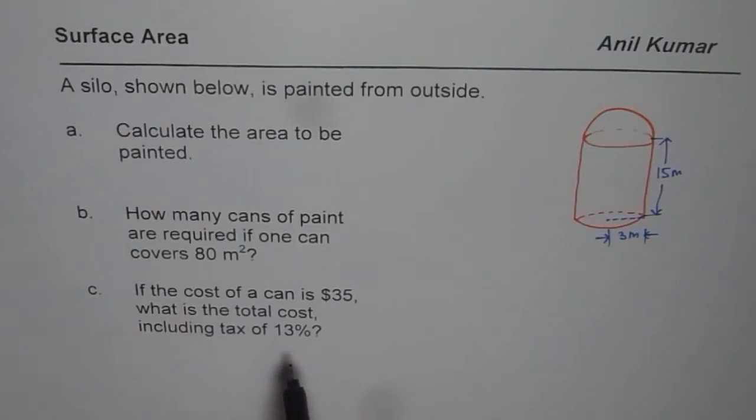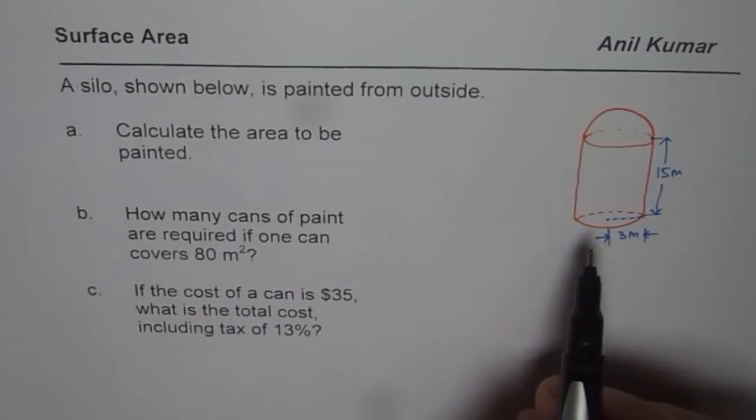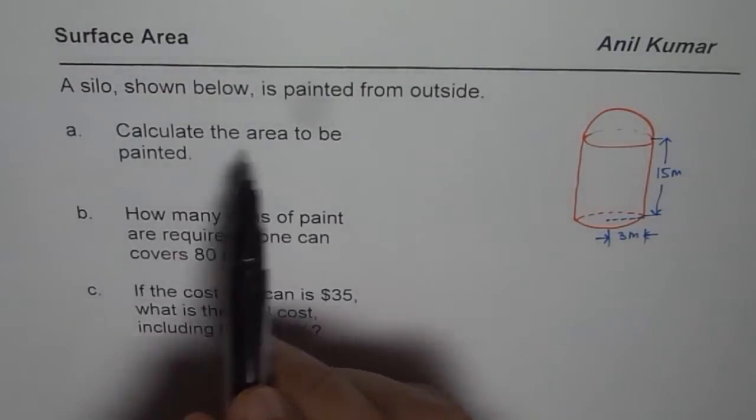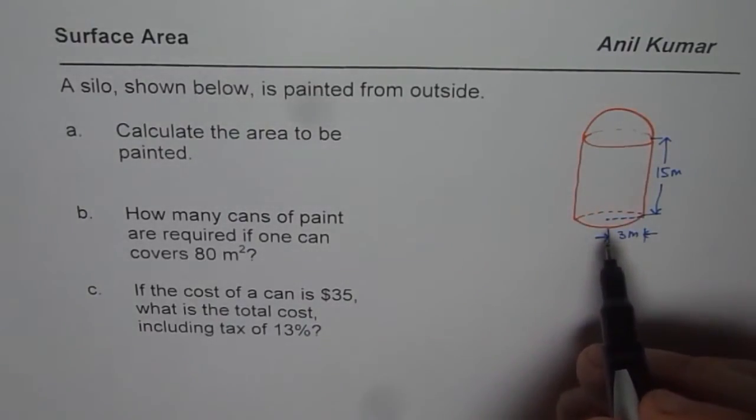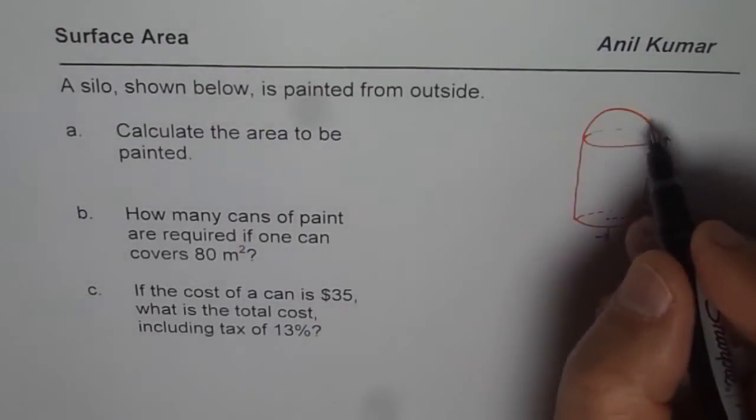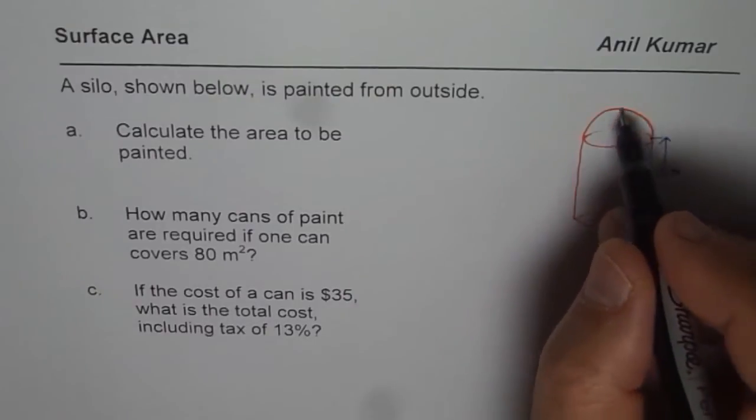You can pause the video, answer the question, and then look into my suggestions. This is a review question. Let us understand the formulas first. When we calculate area to be painted, we find different kinds of surfaces here.